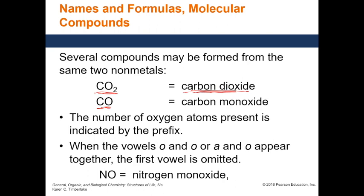For CO, we name the first element carbon. Oxygen becomes 'oxide'. How many carbons? One — but we never put 'mono' at the beginning, so it stays as 'carbon'. How many oxygens? One, so it would be 'monoxide'. So carbon monoxide. To summarize: CO2 is carbon dioxide and CO is carbon monoxide.